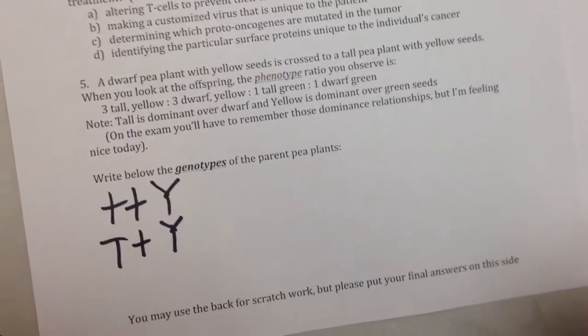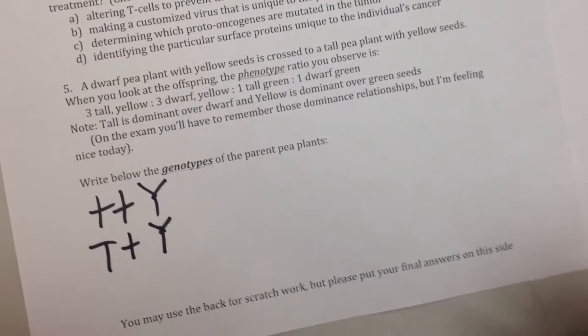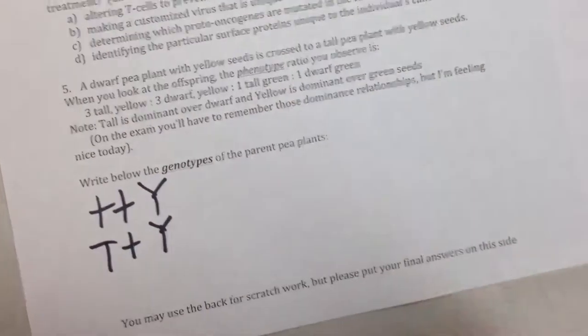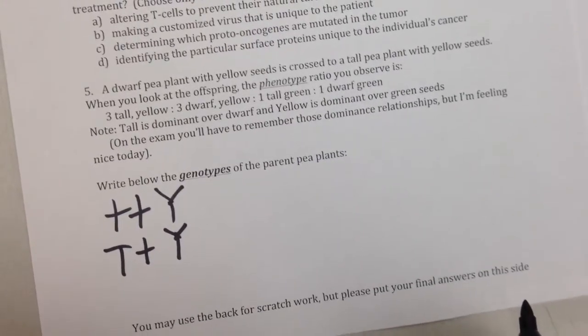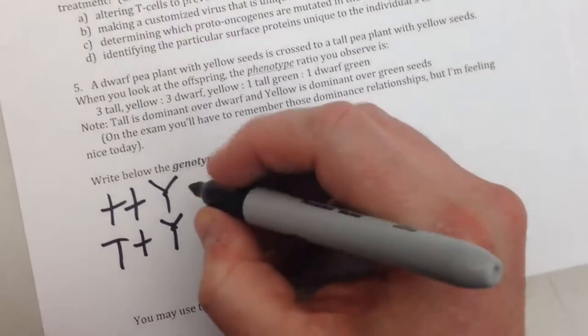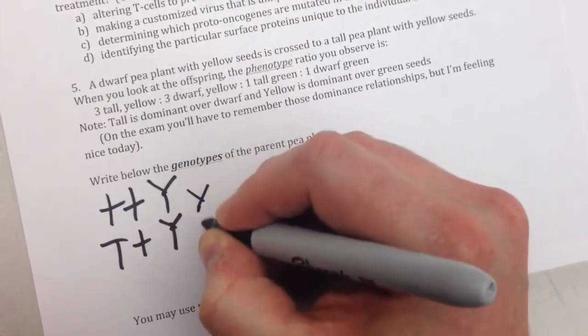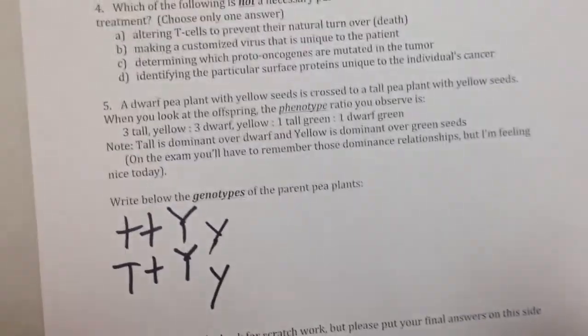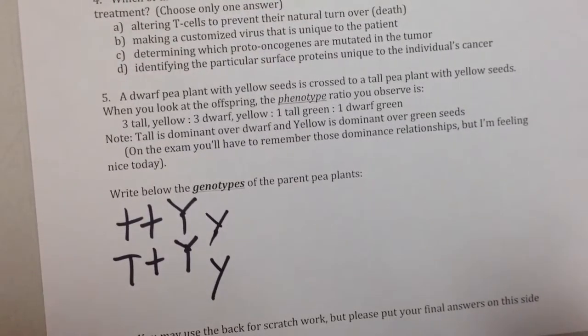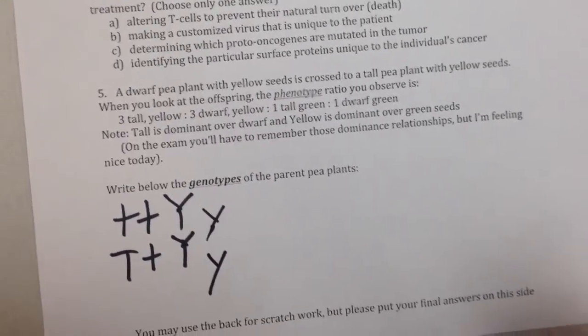Then you realize that the same logic applies to the next gene as well. So the only way that you're going to have any green peas in the offspring is if both parents have one of these recessive alleles. And so right away you've figured out the answer without ever having to do a Punnett square.